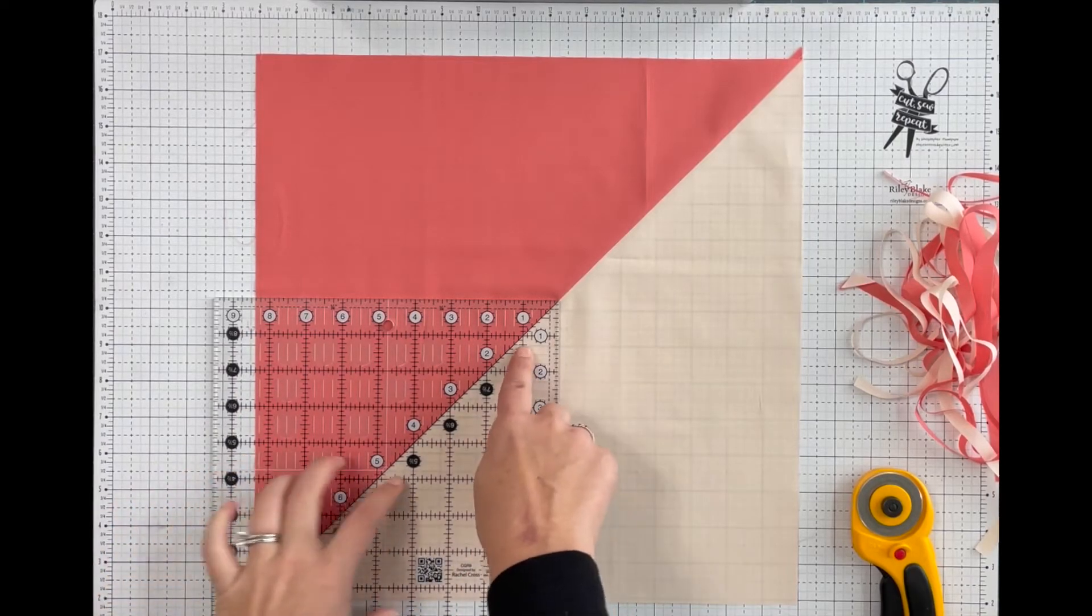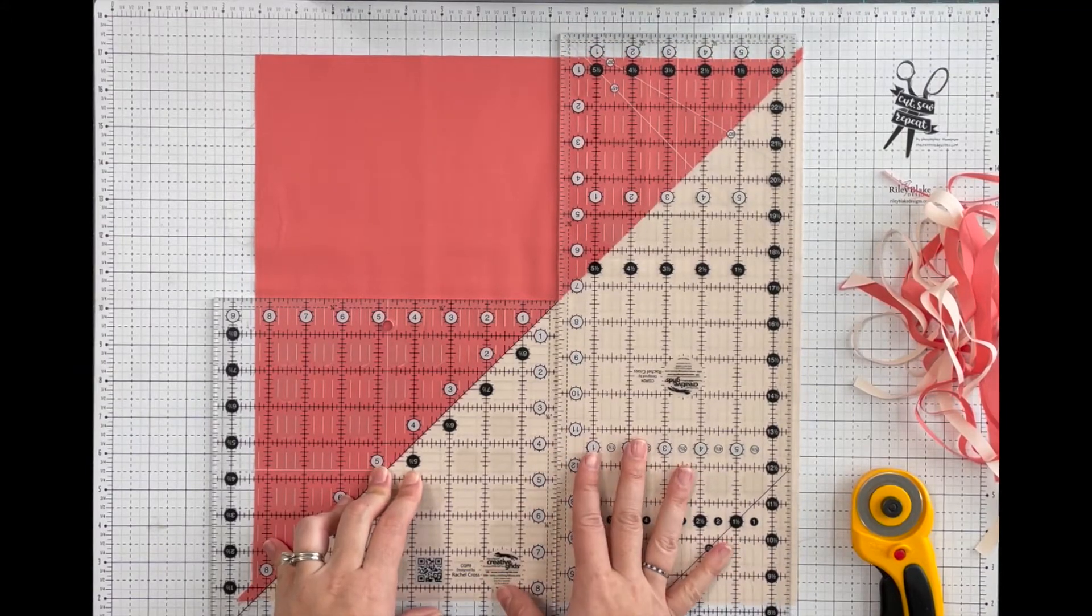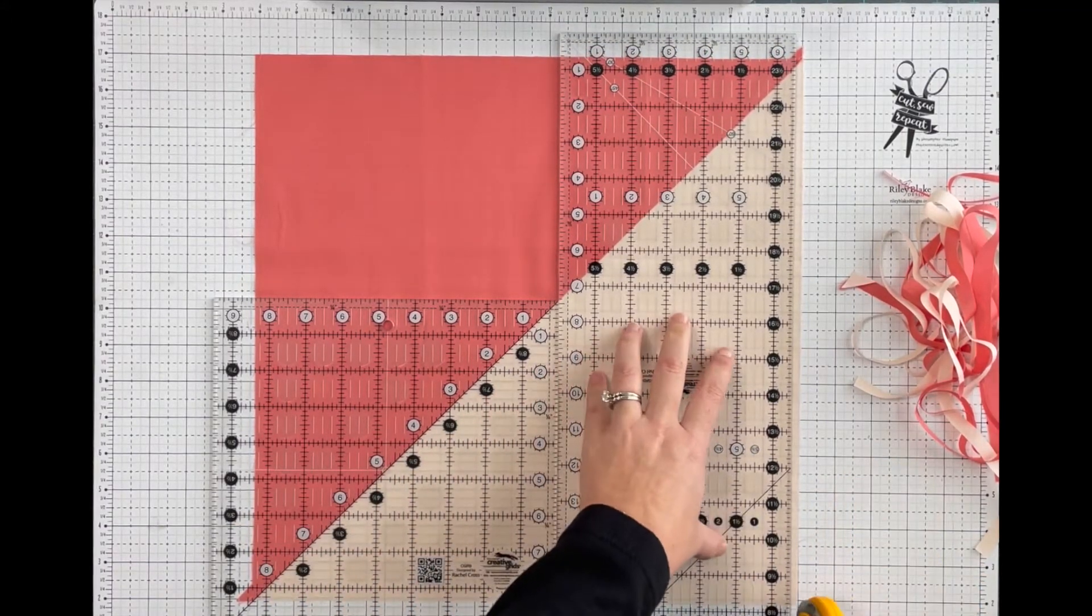So if I'm happy with that, I'm going to lay my 6 and a half inch ruler flush and I'm going to trim this edge.